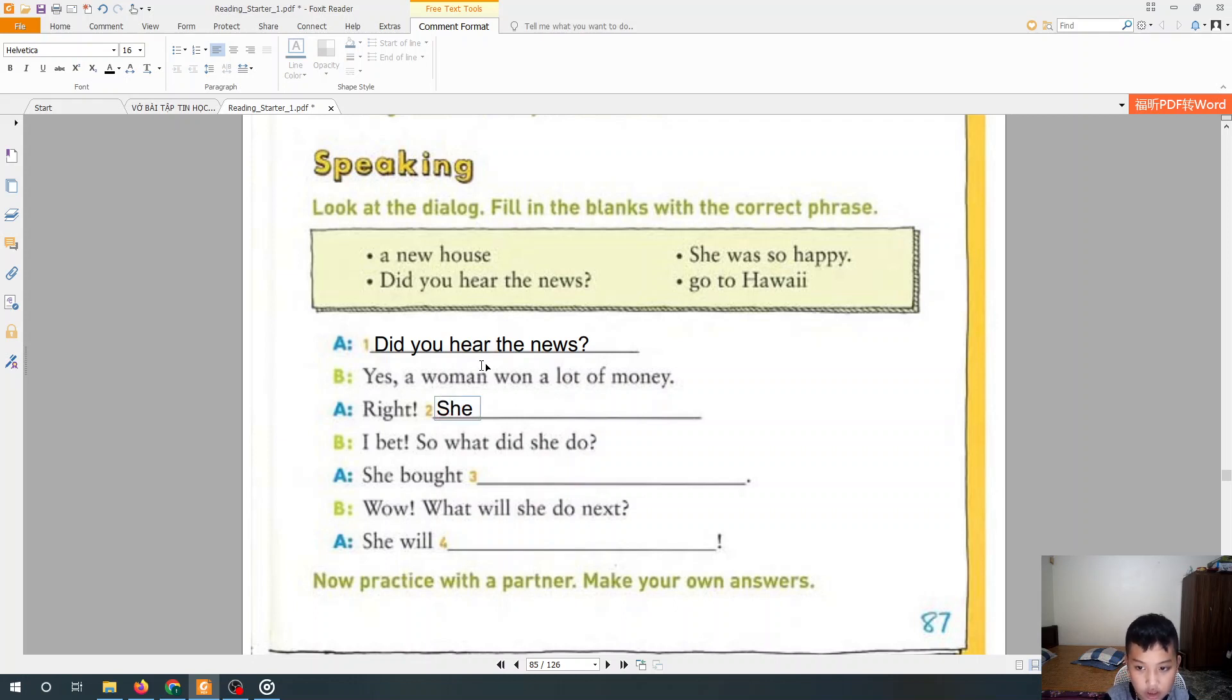Next phrase I will do is she was so happy. Next, I bet. So what did she do? She bought a new house. What did she do next? She will go to Hawaii.